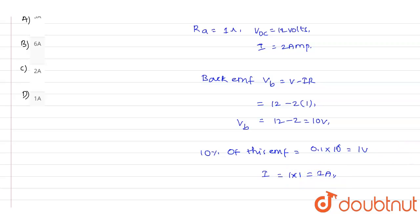Hence, the current drawn by the loaded motor will be 2 plus 1, which equals 3 amps. This is the current drawn from the motor value.